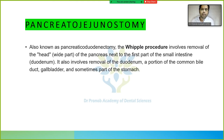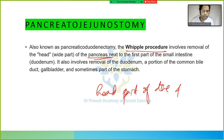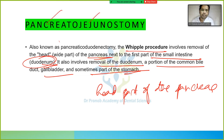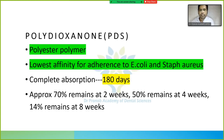The Whipple's procedure involves removal of the head of the pancreas, the first part of the small intestine (duodenum), a portion of the common bile duct, the gallbladder, and sometimes part of the stomach. The remaining structures are reconnected — pancreas to jejunum — which is why it is also called pancreaticojejunostomy.